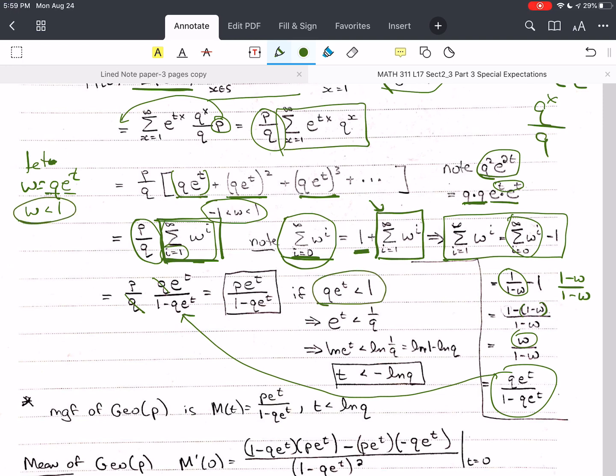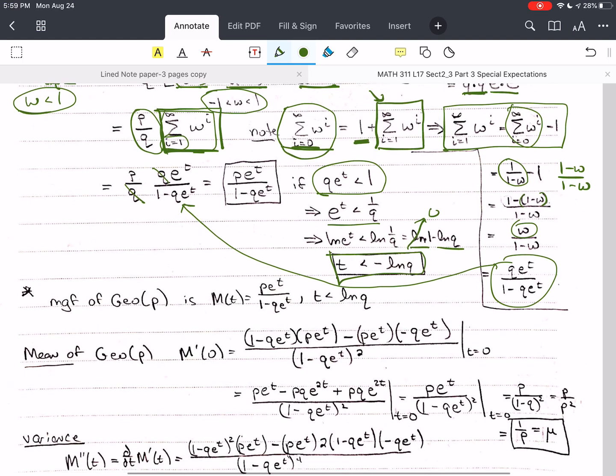So I plug in here for w, q e to the t less than 1. I'm solving for t. So I divide both sides by q here. And then I take the log of both sides, a natural log. So log, natural log of e to the t is just t. We learned that in algebra. And then I have log of 1 over q. Well, when I have a division here, I subtract. I have log 1 minus log q. Log 1 is 0. So I have negative log q. So t is less than negative log q. We have just derived the MGF of the geometric distribution.